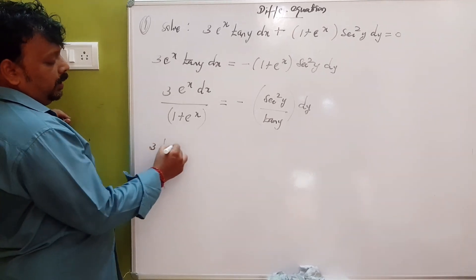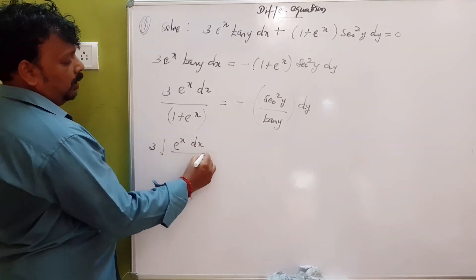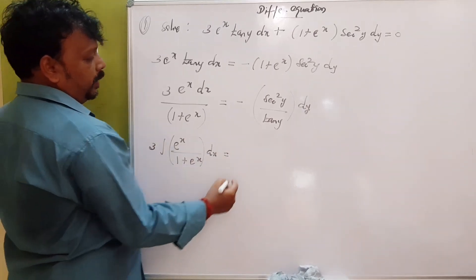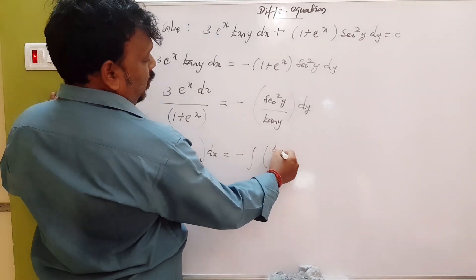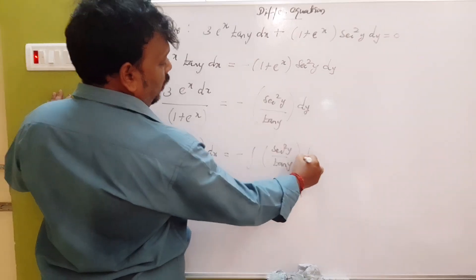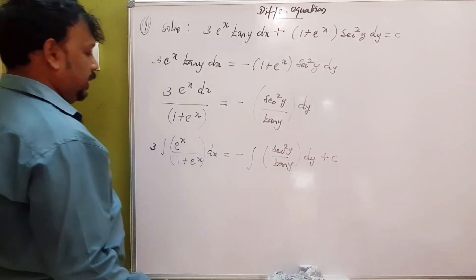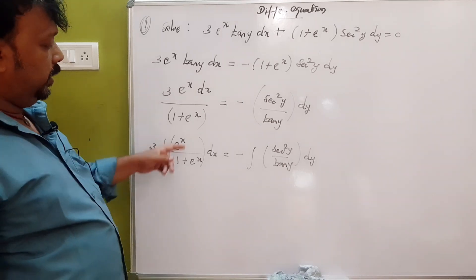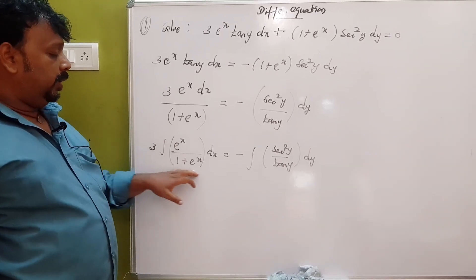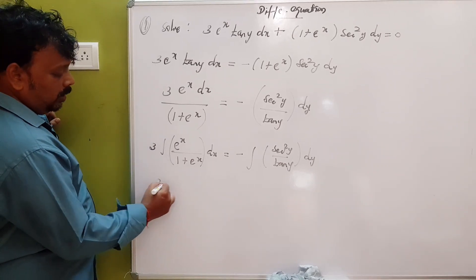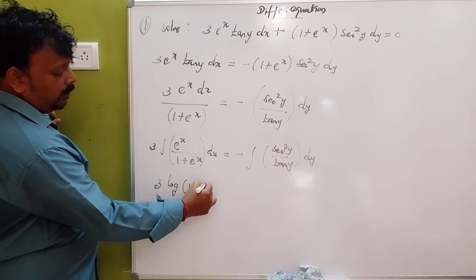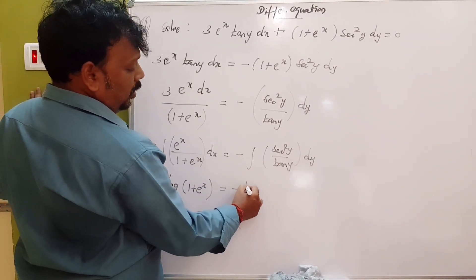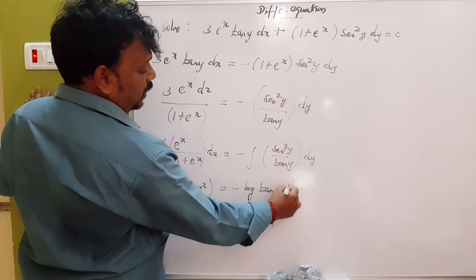Integrating both sides: the integration of 3 times e to the power x dx over 1 plus e to the power x gives 3 log of 1 plus e to the power x. On the other side, integration of sec squared y over tan y dy gives log of tan y.